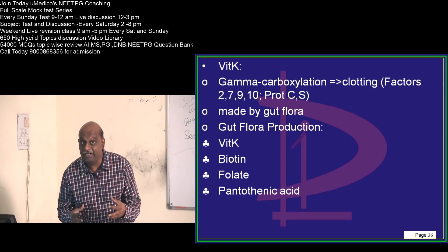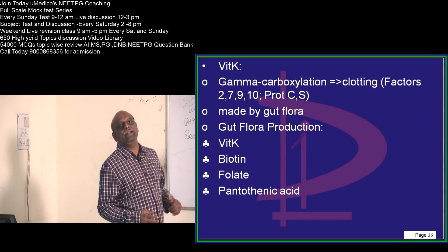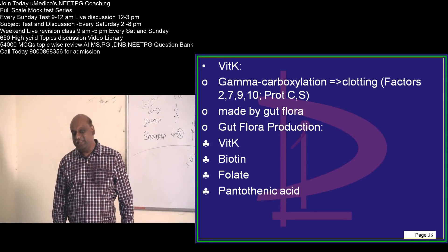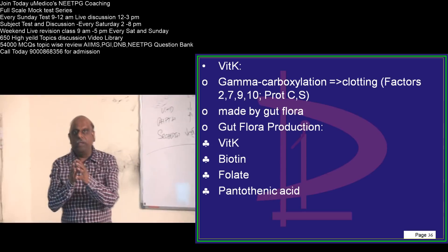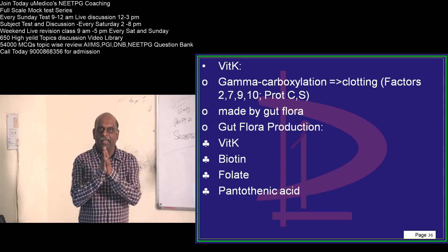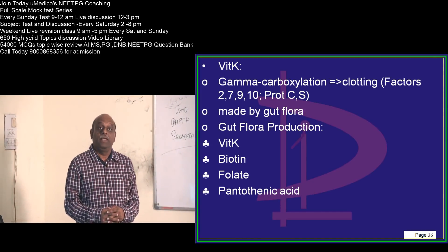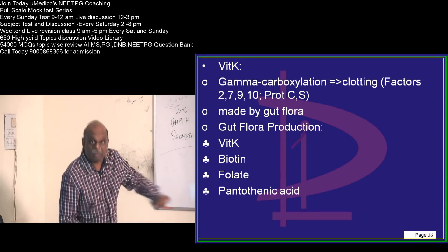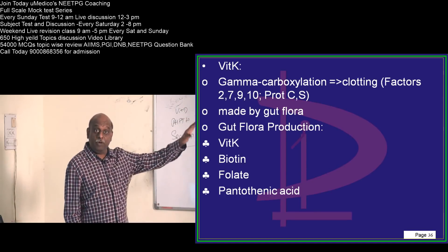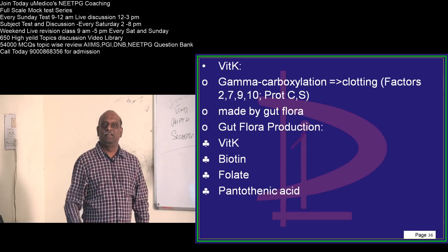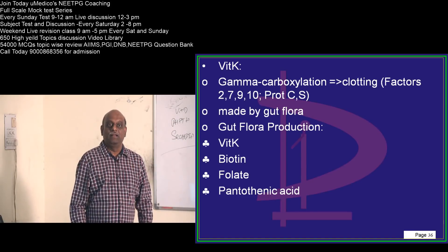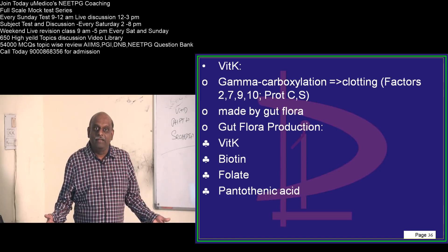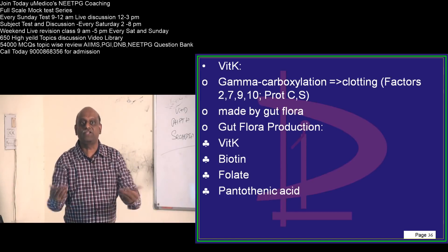But unfortunately, the anti-clotting factors — Protein C and Protein S — are also dependent on vitamin K. That is why, whenever you give warfarin, what actually happens is that even before factors 2, 7, 9, 10 levels come down, Protein C and Protein S levels come down first. And when these antithrombotic factors decrease, there is a more prothrombotic state.